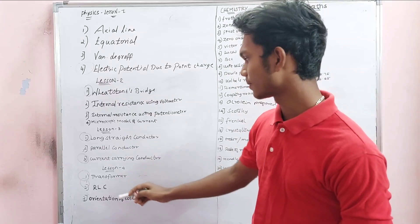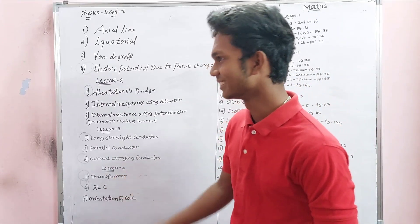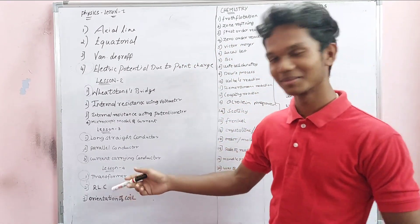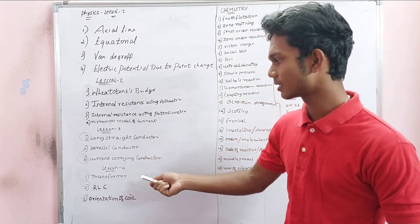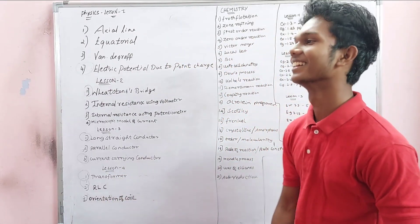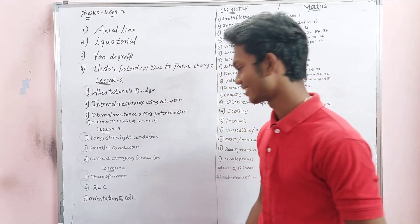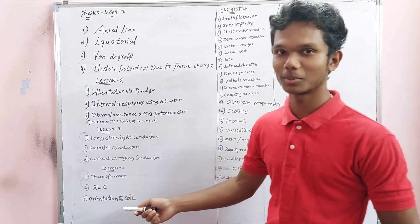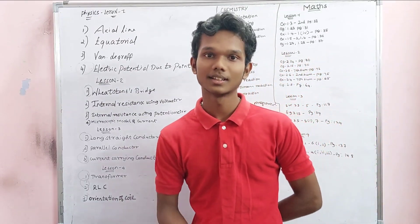Lesson 4 is transformer — it's very important. And RLC circuit — the RLC circuit is easy to do. Transformer derivation is easy to do. The last one is orientation of oil. And chemistry management — you can do it. Thanks.